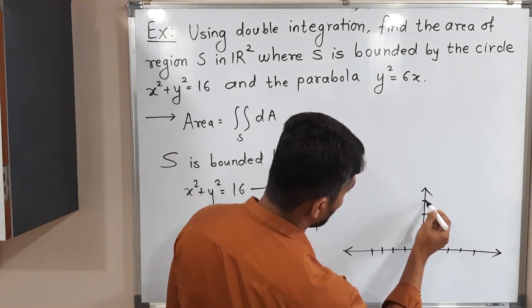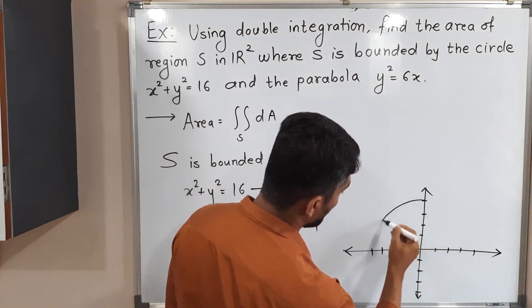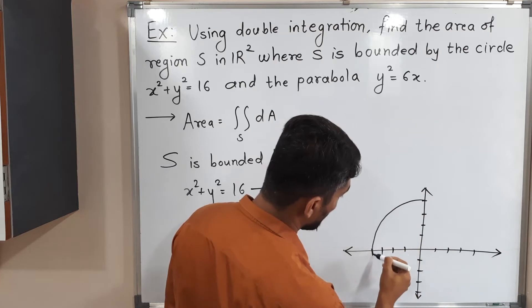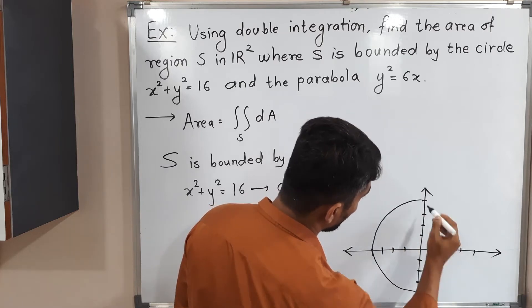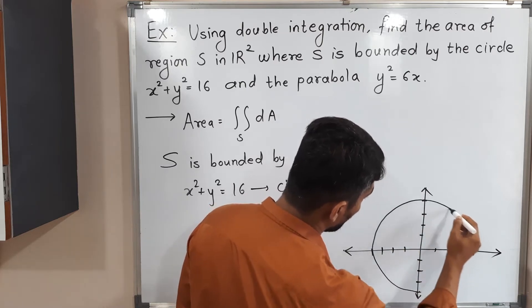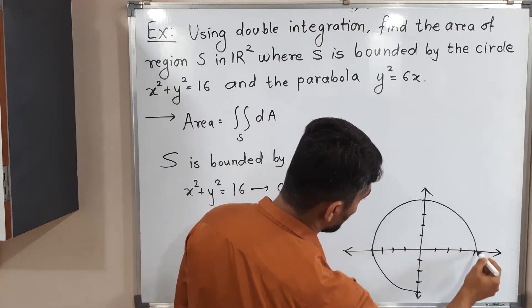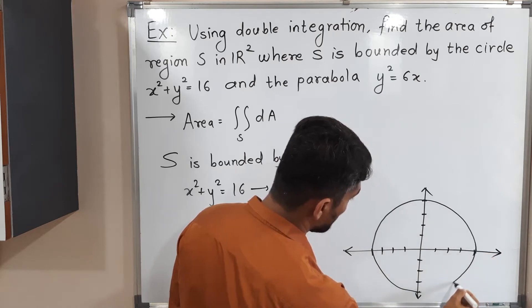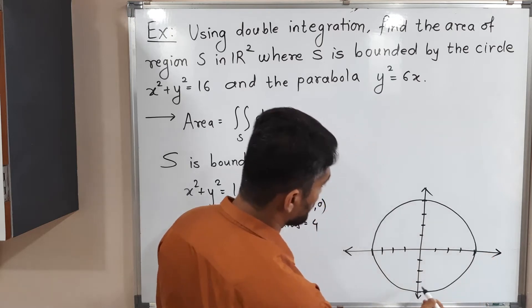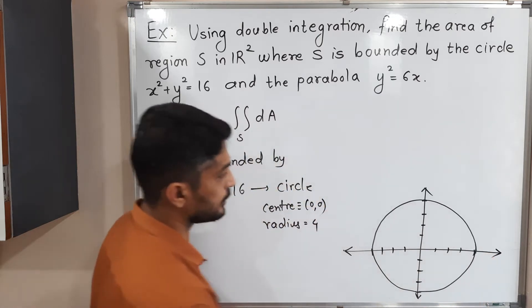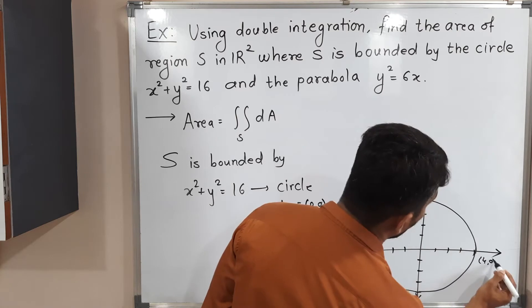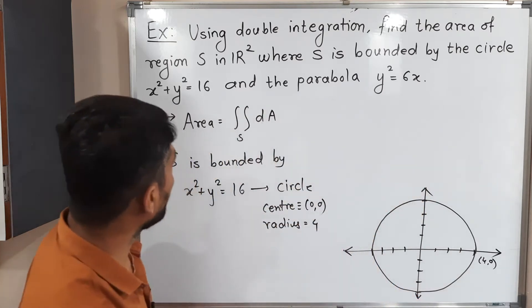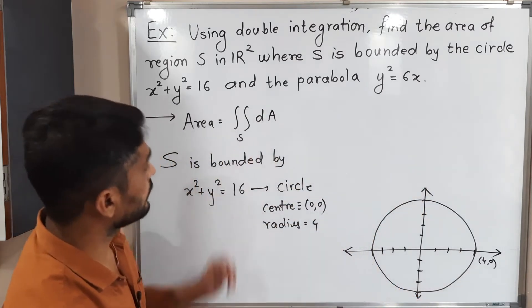Let me draw a rough sketch of that circle. Here is the rough sketch. This is the circle. Let me mark the point (4, 0) on it.